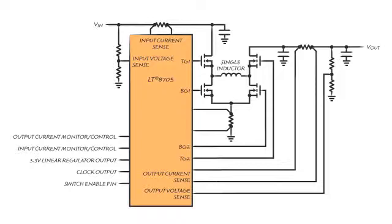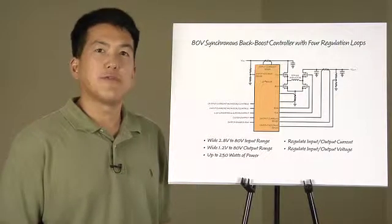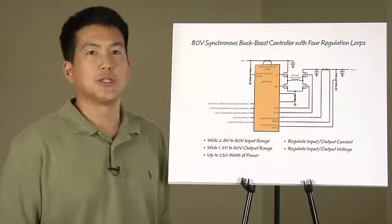The LT8705 can operate with output voltage and input voltage of up to 80 volts while processing up to 250 watts of power. Additionally, the part features four integrated regulation loops.